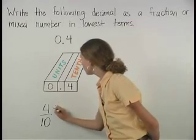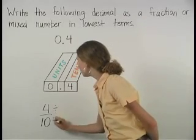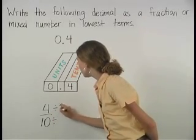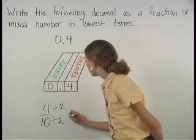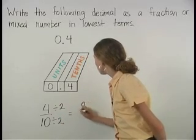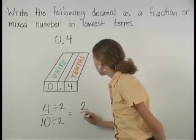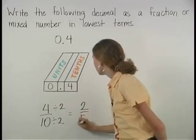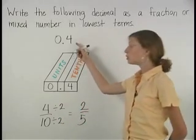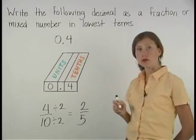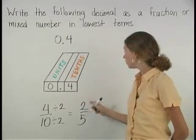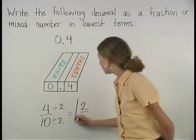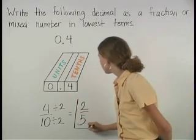So if we divide the numerator and the denominator by 2, we get 2 fifths. So 0.4 can be written as the fraction 2 fifths, which is in lowest terms.